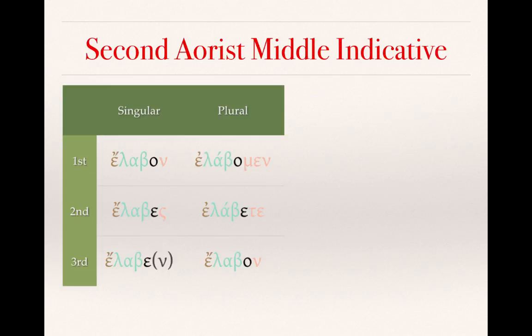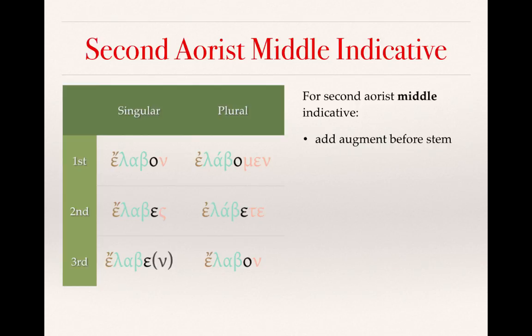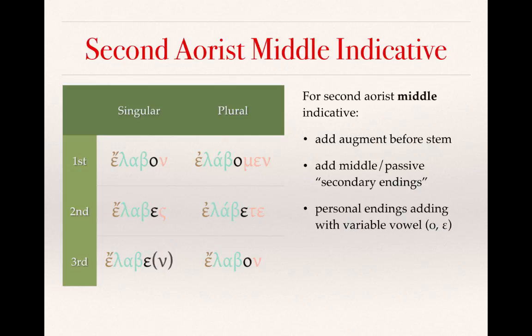A few brief notes about the second aorist middle indicative: add the augment before the stem; here we've added the middle-passive forms of those secondary tense endings; we see the variable vowels omicron and epsilon in some of the forms. Again, the ability to identify the modified or shortened stem is the most important part of distinguishing the second aorist from the imperfect.